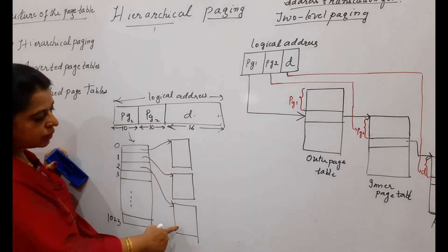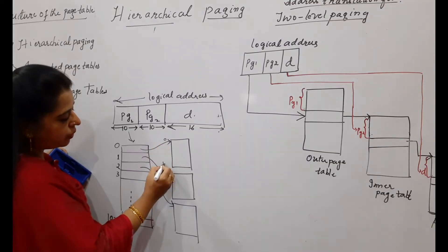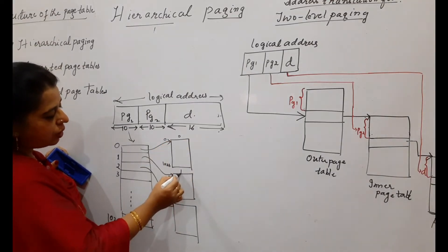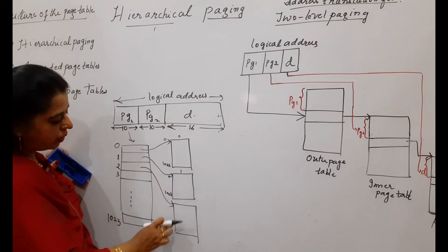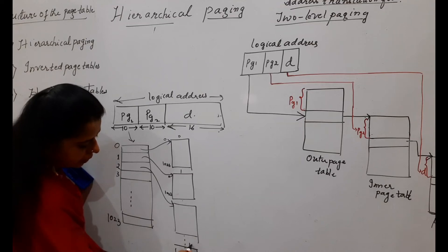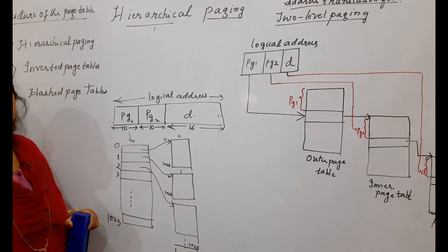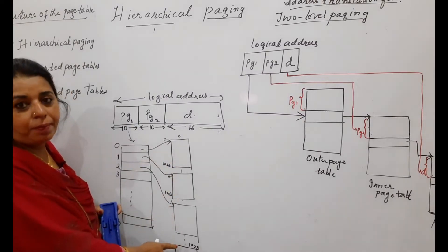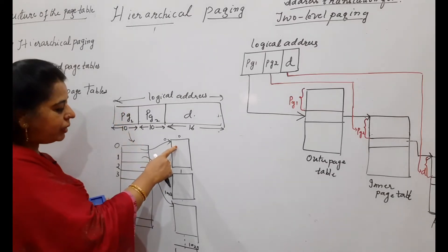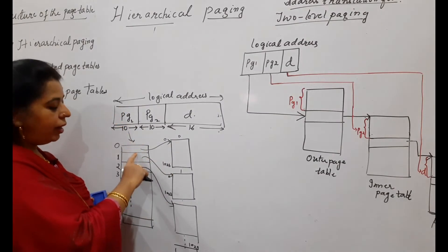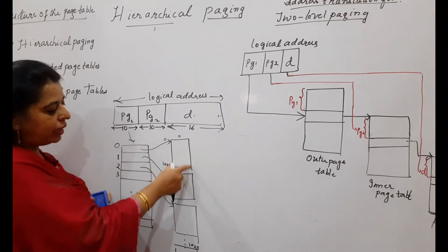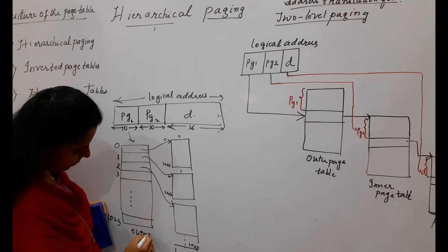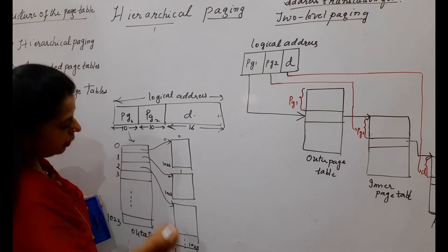Each inner page table also has 0 to 1023 entries — 1024 locations. So there will be 1024 inner page tables in total, and 1024 entries for the outer page table. The outer page table acts as an index to the inner page tables. This is essentially indexing to indexing — the outer page table provides indexing to the inner page table.